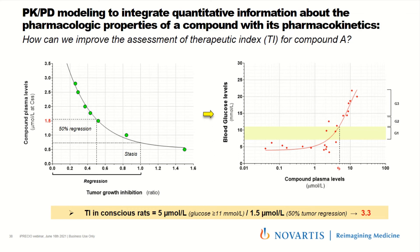Plotting plasma levels on the x-axis against glucose levels measured from tail blood on the y-axis, we found that up to 5 µM we remained in the 'green zone' (Grade 1 — not clinically concerning). Above 5 µM, we entered Grade 2 hyperglycemia, which would initiate anti-diabetic treatment in patients. Calculating the therapeutic index: the Grade 2 toxicity threshold divided by the 50% tumor regression concentration of 1.5 µM gives a TI of 3.3, which is quite good for oncology.